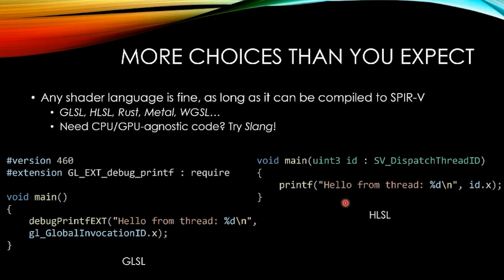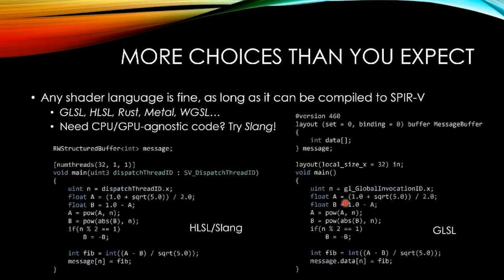Here's a quick side-by-side comparison of the same shader in two different languages, and another comparing HLSL/Slang on the left with GLSL on the right. As an example, this is a shader that computes the nth Fibonacci number in a non-sequential manner. Keep that particular shader and what it does in mind — we will come back to it shortly.